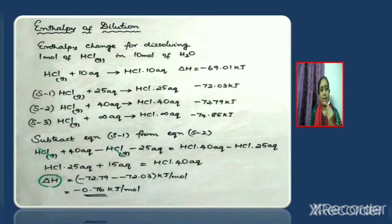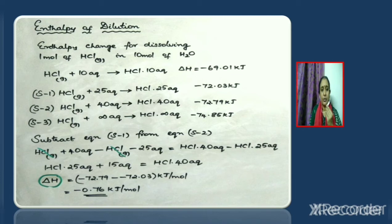Enthalpy of dilution is defined as the enthalpy change that accompanies the addition of a specified amount of solute to a specified amount of solvent at constant temperature and pressure. For example, the enthalpy change for dissolving one mole of HCl gas in 10 moles of water is equal to −69.01 kJ/mol, written as: HCl(g) + 10 aq → HCl·10aq, where aq represents water.